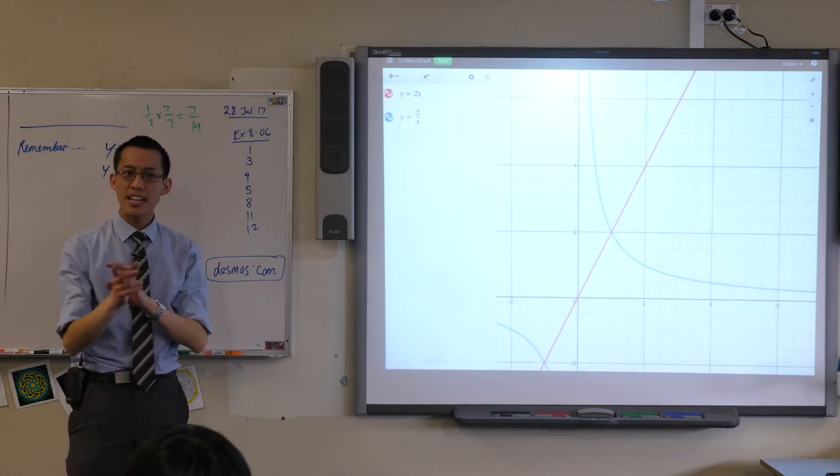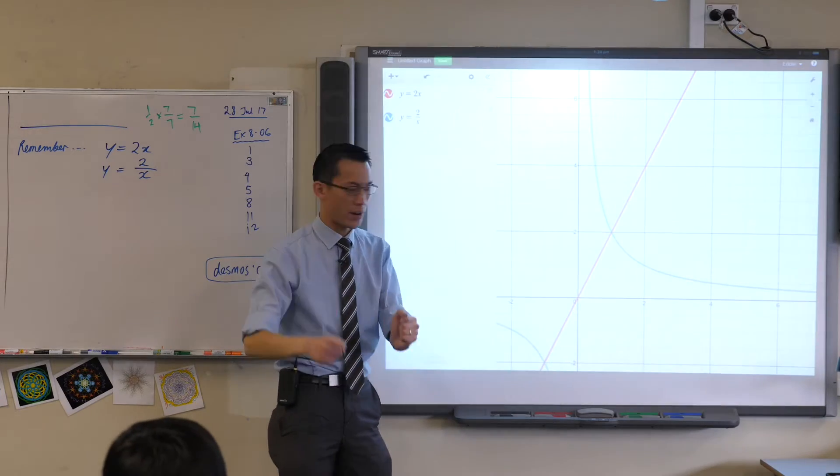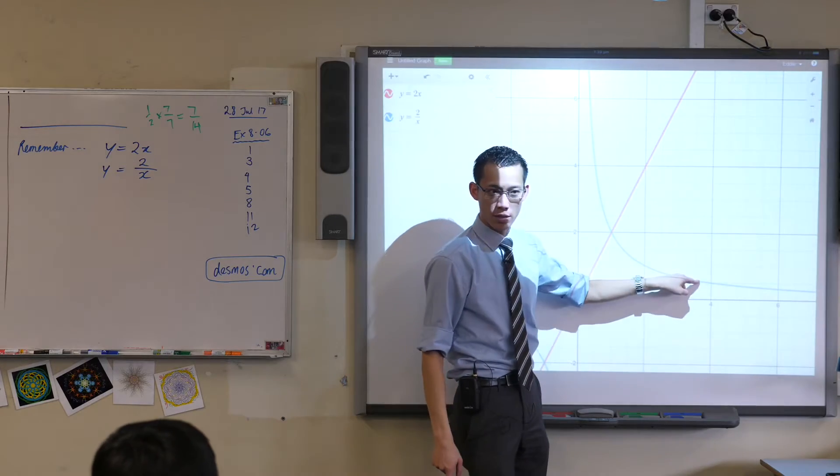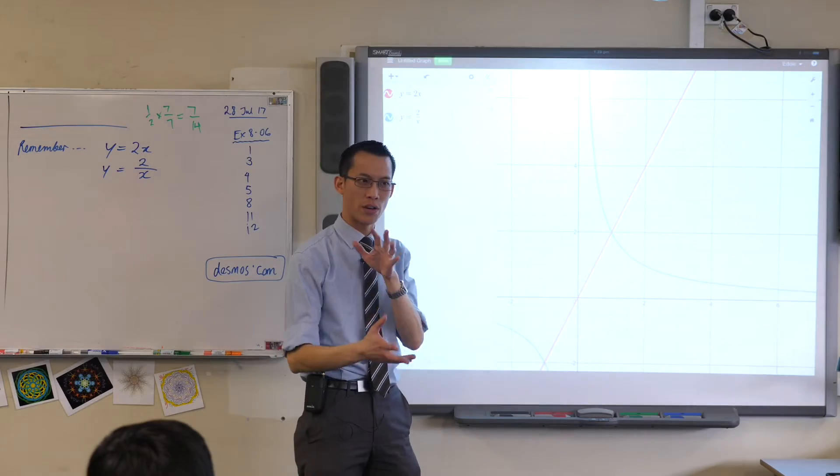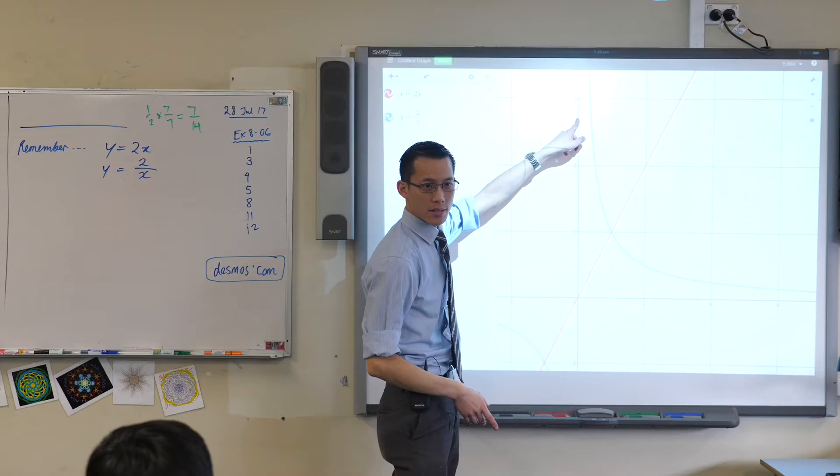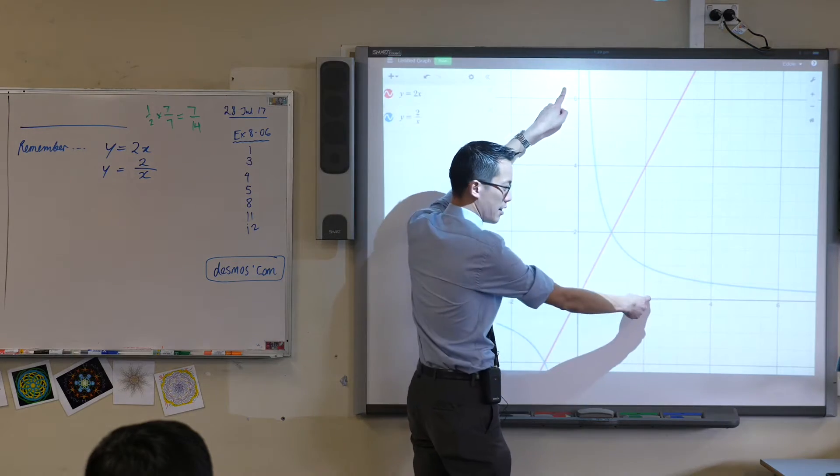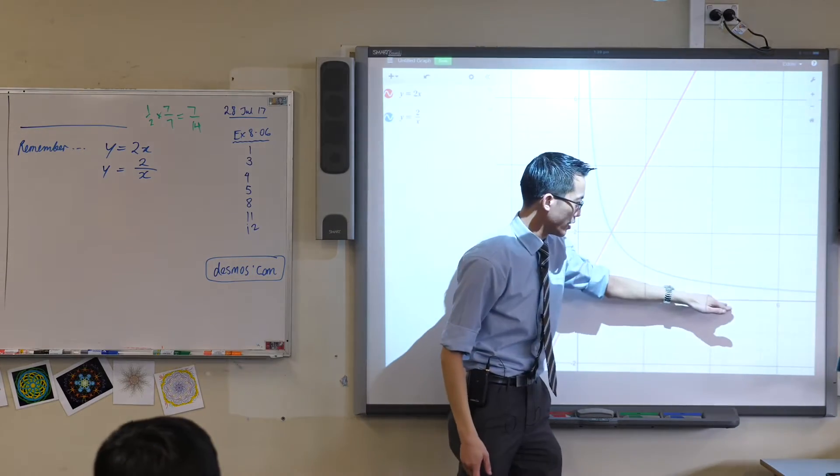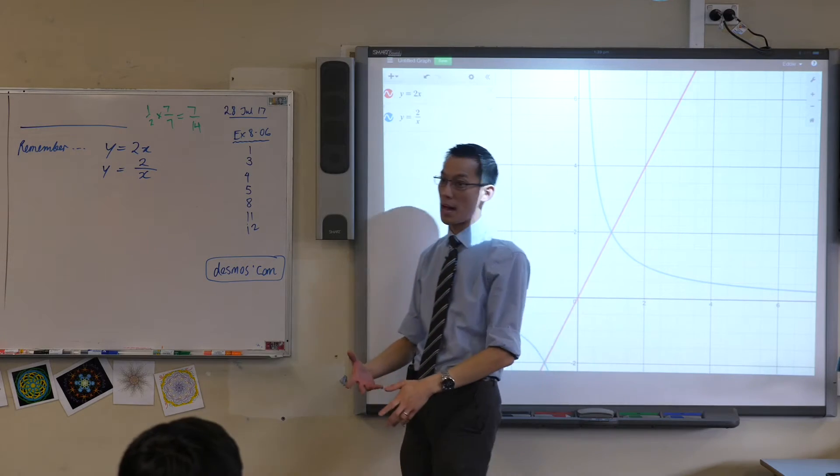So think about what these red and blue lines mean. The red line is direct variation. One quantity goes up, the other quantity also goes up. Whereas the blue line is an inverse variation or inverse proportion. As you can see, when I go up on this, the blue gets closer to this side. So this number increases, this number decreases. Or in the same way, as this number increases, this number decreases. I get lower and lower and lower as time goes on.